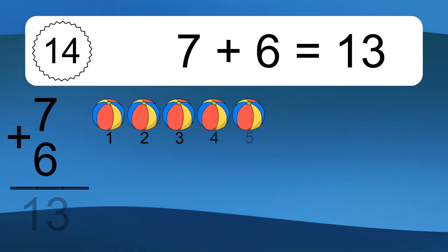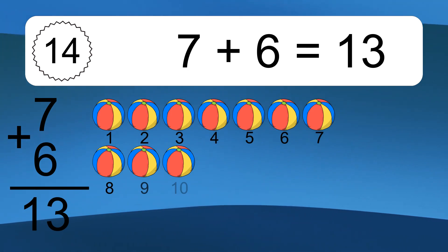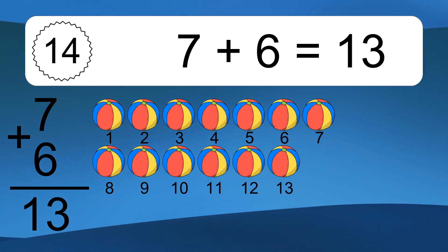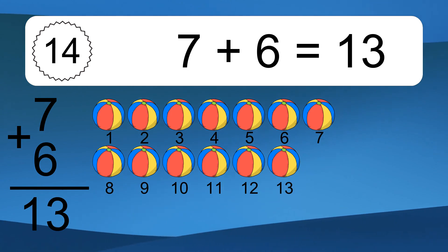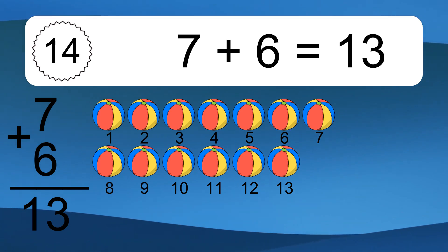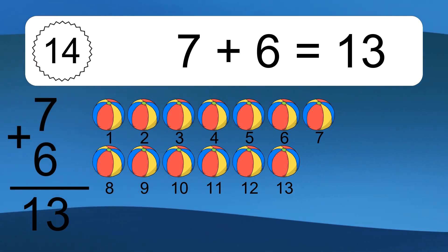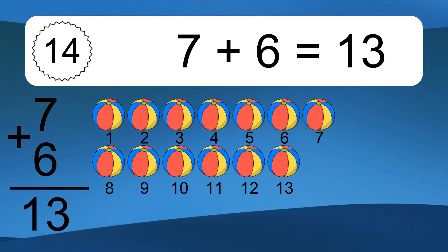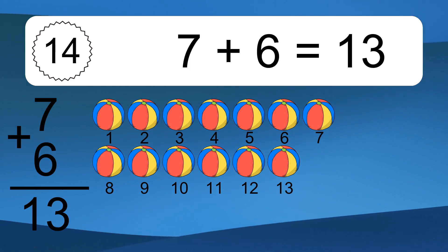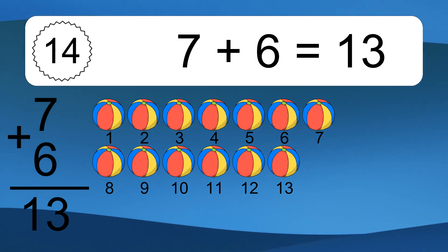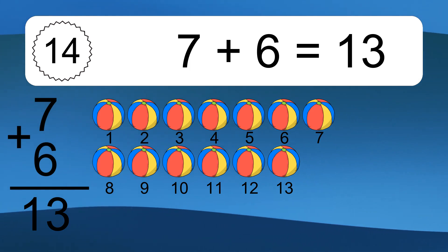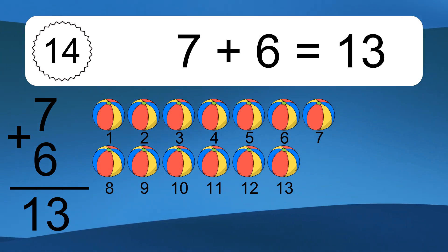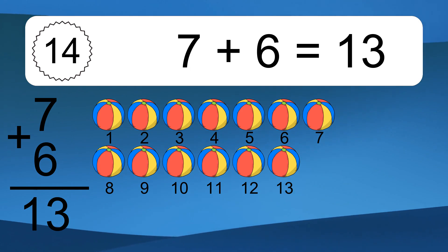7 plus 6 equals what? 7 plus 6 equals 13. Let's count it. 1, 2, 3, 4, 5, 6, 7, 8, 9, 10, 11, 12, 13.